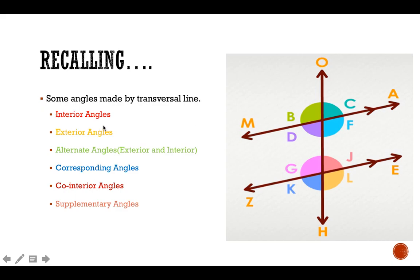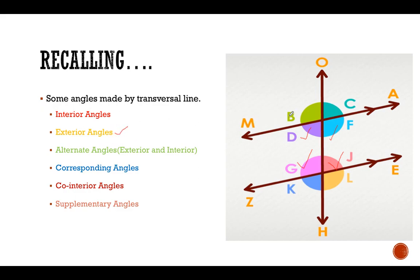First, let's recall interior angles. The angles d, f, g, and f are interior angles. Exterior angles are b, c, k, and l. The question is: how do we find out whether angles are interior or exterior?